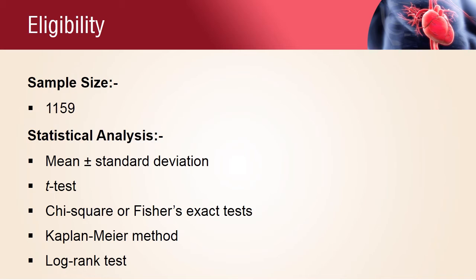Continuous variables were expressed as mean standard deviation and compared between groups using the T-test. Categorical data was expressed as percentages and compared between groups using the Chi-square or Fisher's exact tests. The cumulative incidence of events was calculated using the Kaplan-Meier method, and the estimated curves were compared using the log-rank test.